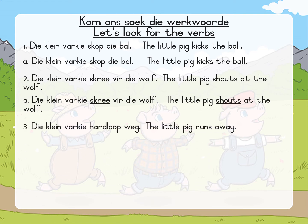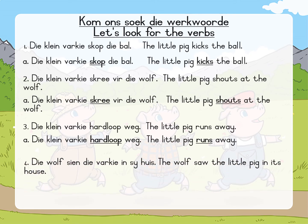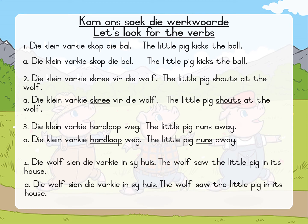Die klein varkie hardloop weg. The little pig runs away. So hardloop is ons werkwoord. Runs is the verb. Die wolf sien die varkie in sy huis. The wolf saw the little pig in its house. So sien is wat die wolf gedoen het — those are the werkwoord and verb in the sentence.